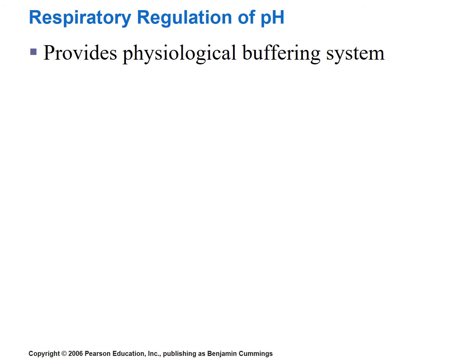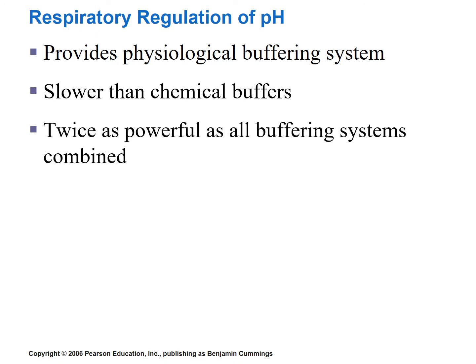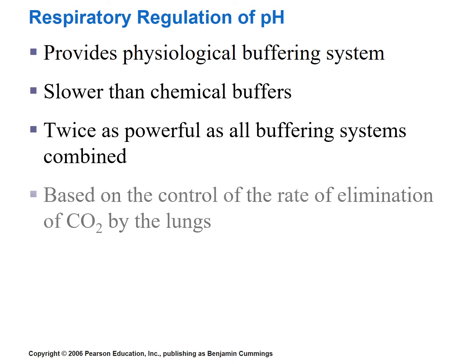The bicarbonate, phosphate, and protein buffering systems were chemical buffers. The respiratory system, in contrast, is a physiological buffering system. While it is slower to react to changes in pH compared to chemical buffers, it is twice as powerful as all three buffering systems combined. Its ability to regulate pH is based on its ability to control the rate of elimination of carbon dioxide from the blood by the lungs.